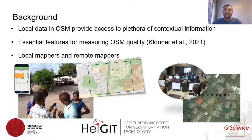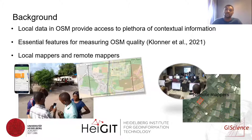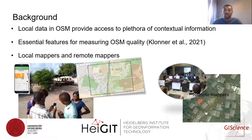The increasing availability and importance of local data in OSM has been largely acknowledged. Local data provides access to several contextual information and can be used for several applications. It is also an essential feature for measuring OSM quality. Usually mapping activities in OSM can be grouped into local mappers and remote mappers. Remote mappers can map from anywhere, while local mappers tend to have local knowledge and contribute only locally.